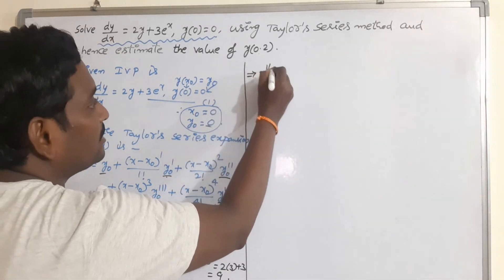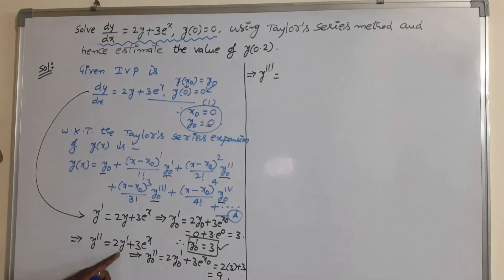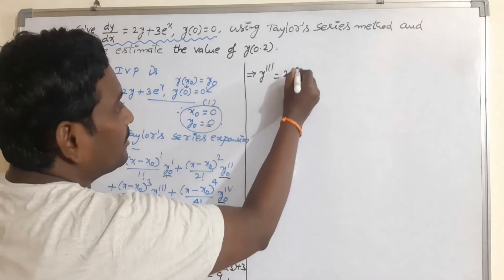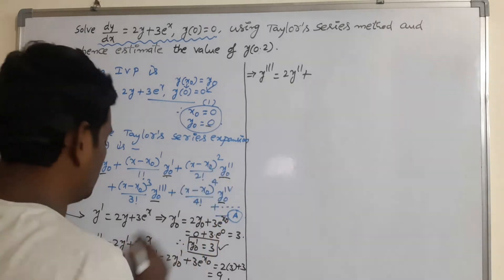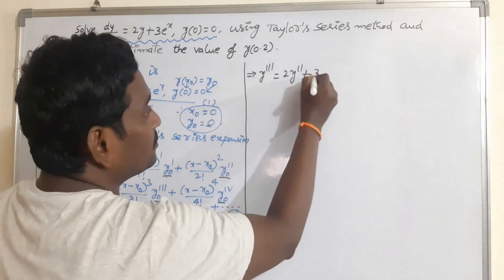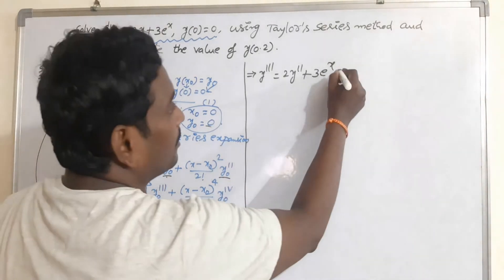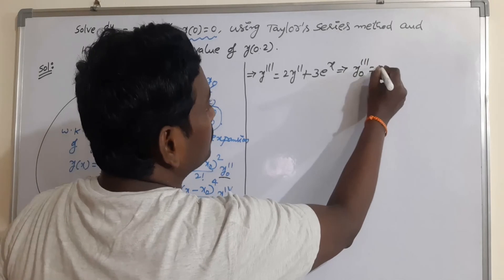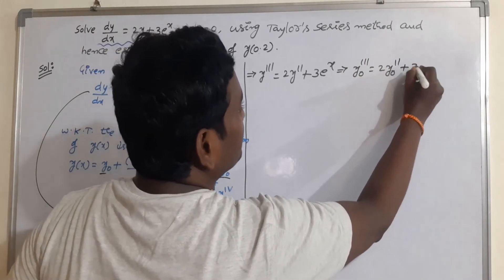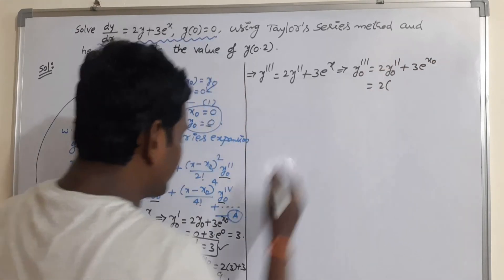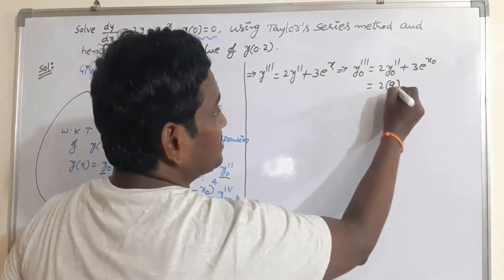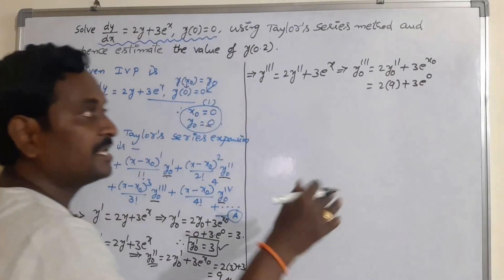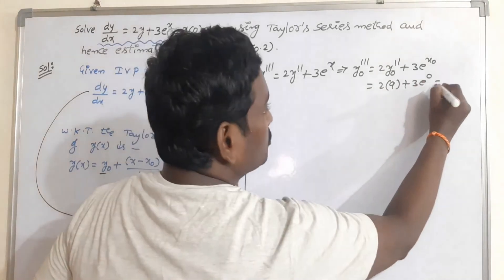Now calculate y''' by taking another derivative: y''' = 2y'' + 3e^x. So y₀''' = 2y₀'' + 3e^(x₀). Replace the values: 2 times 9 plus 3 times e^0 = 18 + 3 = 21. This is the value of y₀'''.